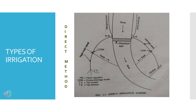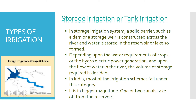On the upstream side, marginal bunds are provided so that soils are retained. Overflow is controlled by the marginal bunds. This completes the description of a direct irrigation scheme.